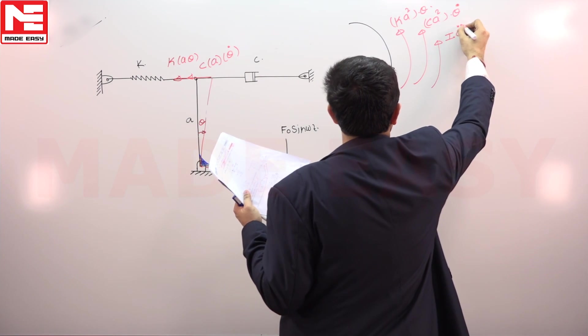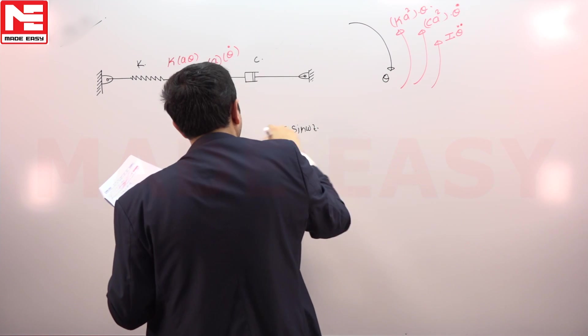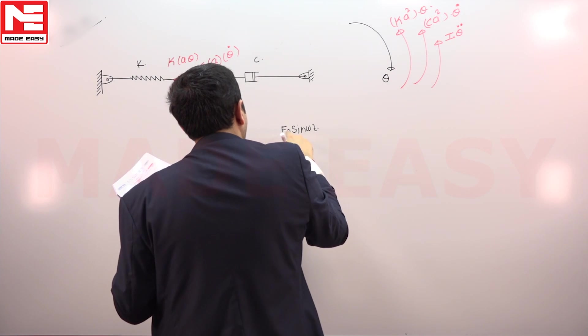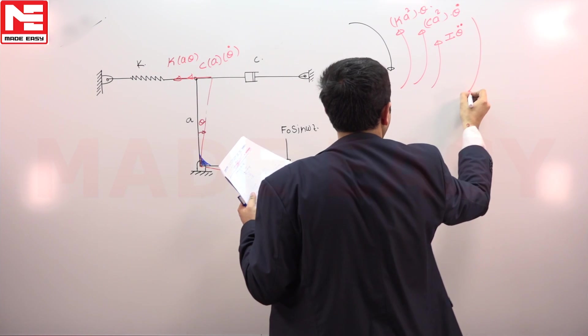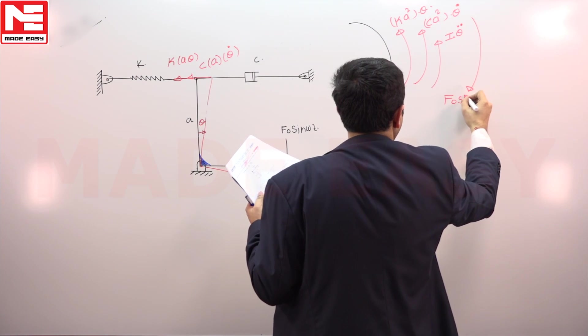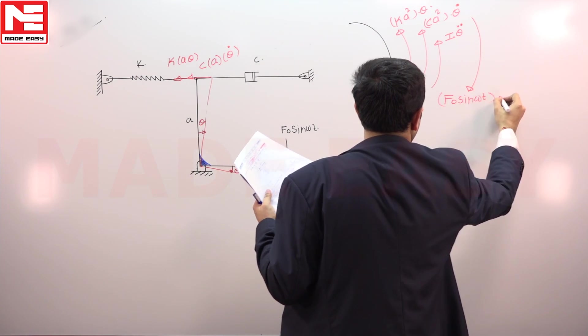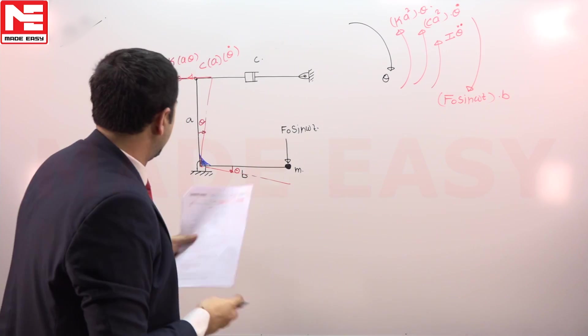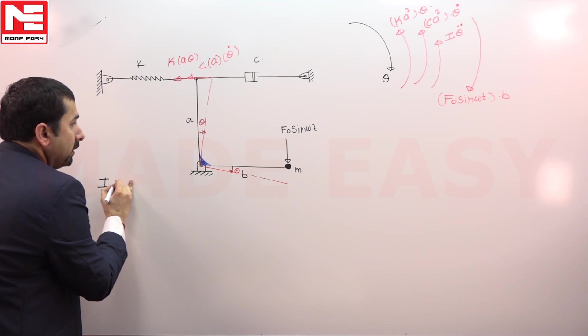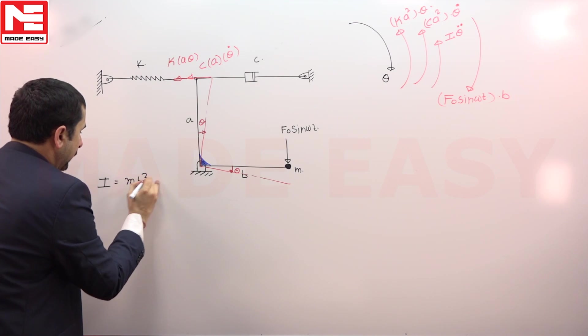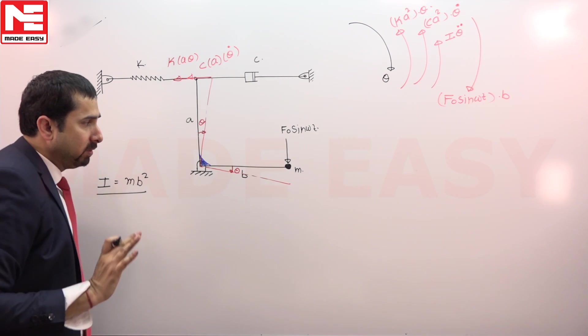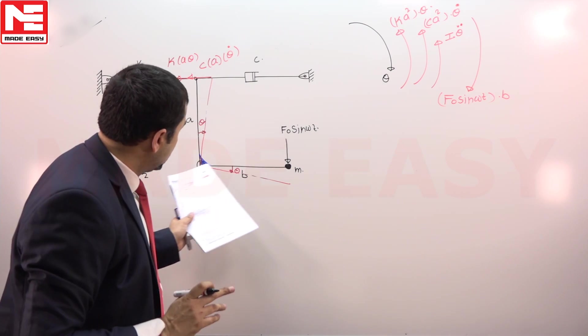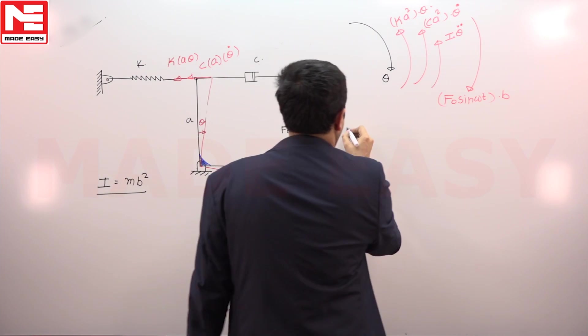And then another force will be inertia force, which is I theta double dot. And one more force will be giving you the torque—that is F naught sine omega t into b. The I we know very well is m into b square, because about the point of hinge the complete system I will be m into b square, m is at the distance b.